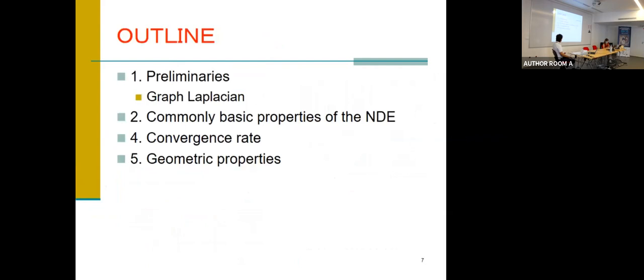So, here is the outline of this talk. First part is the preliminary. And the second part is the commonly basic properties are demonstrated. And we give an estimate of a convergence rate. And finally, we discuss the geometric properties of the network diffusion equation.